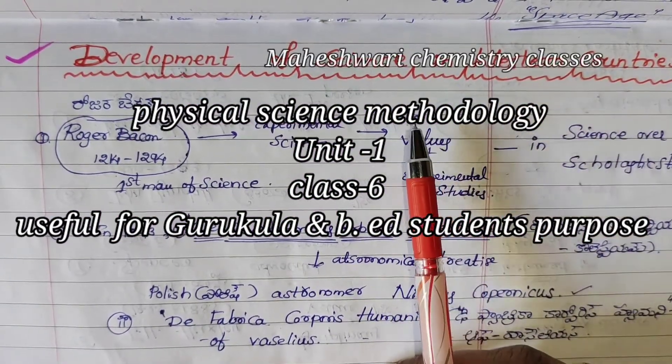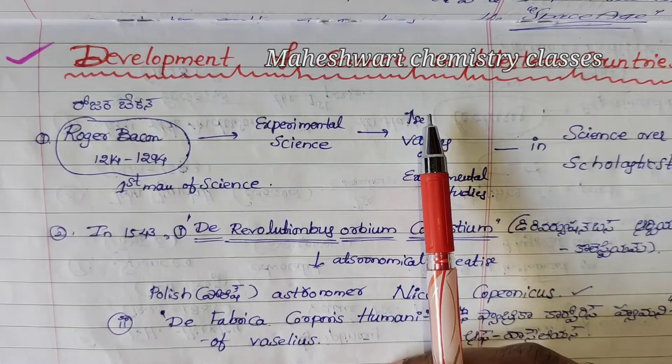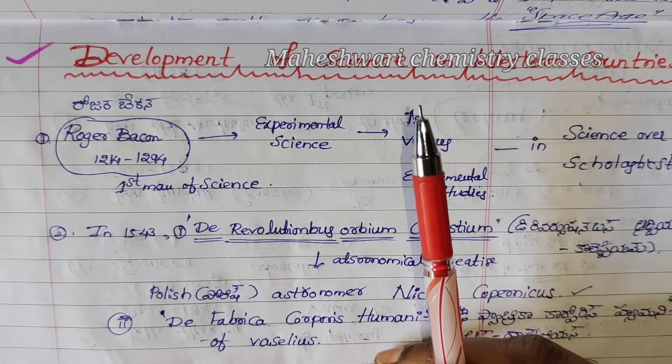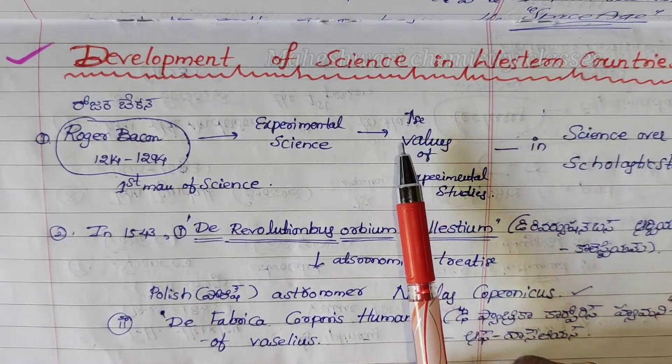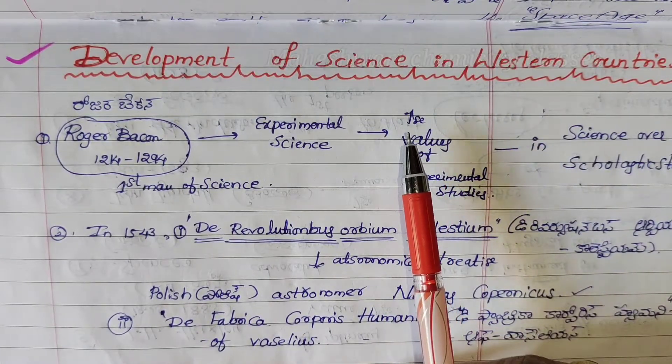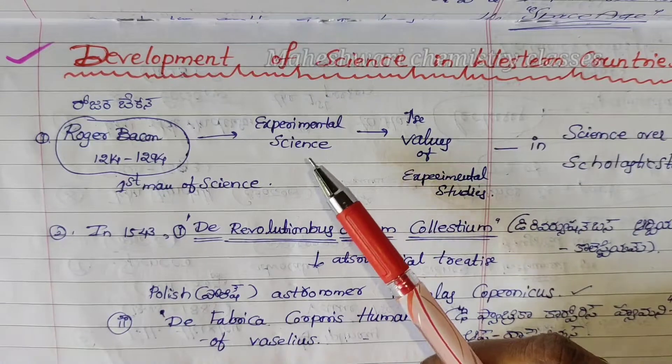First topic, first unit — we are going to talk about 5 classes. Class number 6.